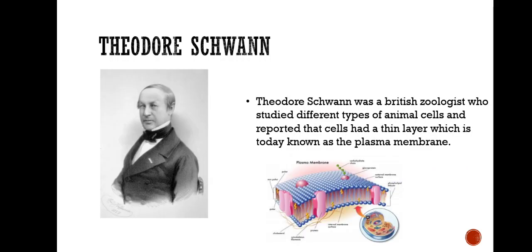Theodore Schwann was a British zoologist who studied different types of animal cells and reported that cells had a thin layer which is known as the plasma membrane. He also discovered pepsin, the first digestive enzyme prepared from animal tissue, and experimented to disprove spontaneous generation.